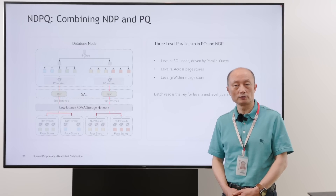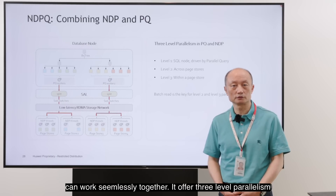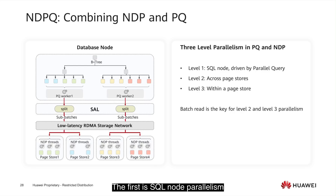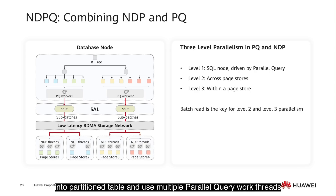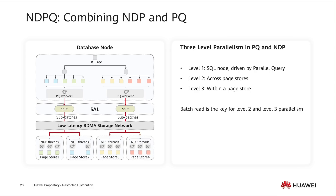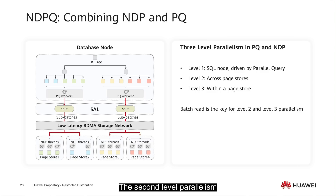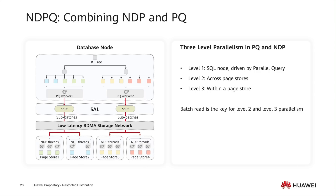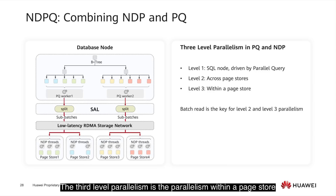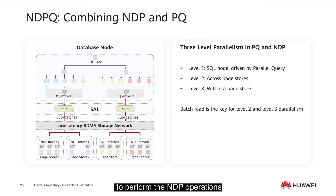Near data processing and parallel query can work seamlessly together — it offers three-level parallelism. The first is SQL node parallelism: parallel query drives the SQL node parallelism by partitioning the table and using multiple parallel query worker threads to scan partitions concurrently. The second-level parallelism is parallelism across page stores. The SAR layer splits the batch read into multiple sub-batches based on where the pages are located. The third-level parallelism is parallelism within a page store.